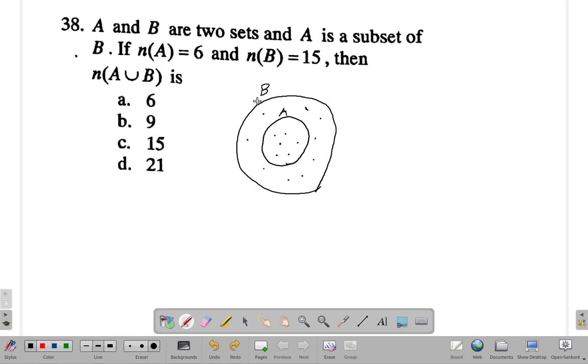The number in A union B is, well, it's 15 because it's everything in A and B, and A is a subset of B. So the answer is 15.